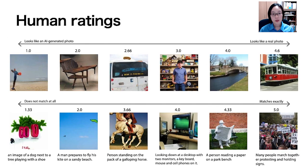We collected human ratings for images generated by four text-to-image models. The examples shown here demonstrate that the ratings are reasonable. As we move from left to right, annotators progressively gave higher ratings to the images.